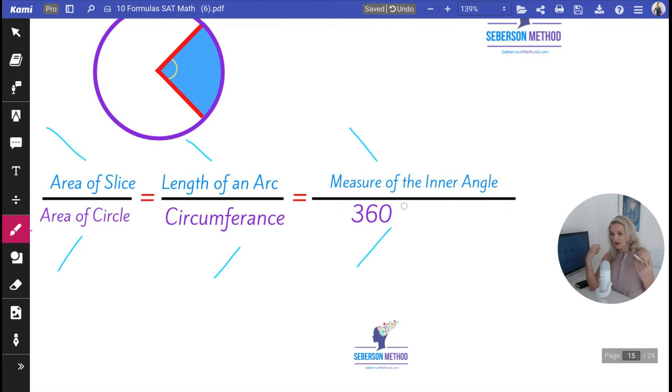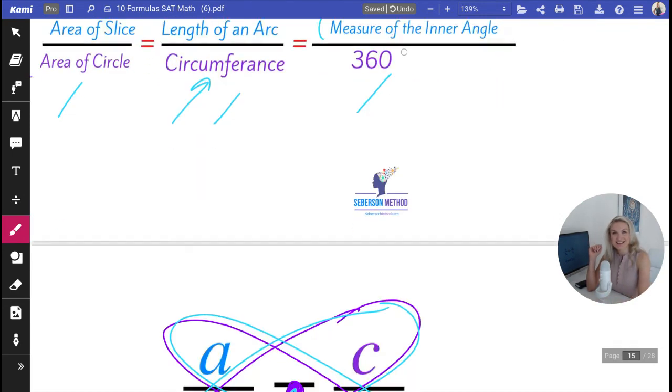If you're taking a part which is the measure of the inner angle, you have to divide it by what makes it whole, which is 360 degrees for a circle. I hope this makes sense.